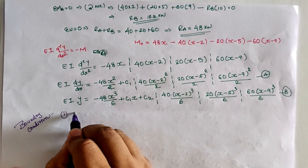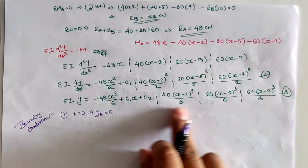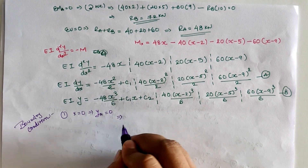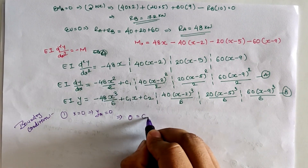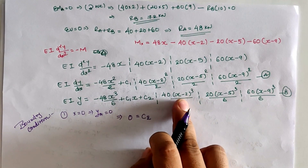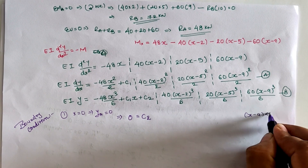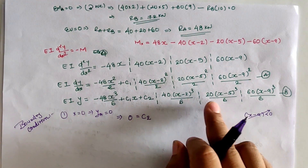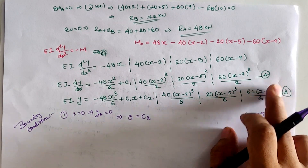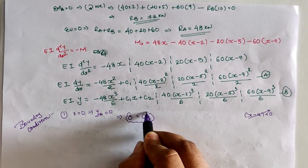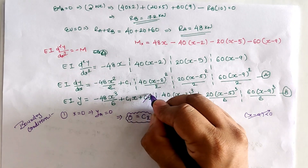Applying the first boundary condition x = 0, y = 0 at location A into the deflection equation: x³/6 = 0, C1×0 = 0, C2 is constant. Now (0 − 2) = −2, which is less than zero, so we ignore this term per Macaulay's method. Similarly (0 − 9) is negative, so also ignored. From the first boundary condition, C2 = 0.